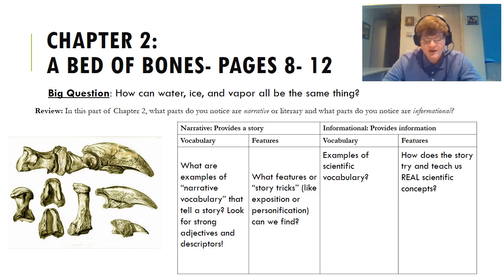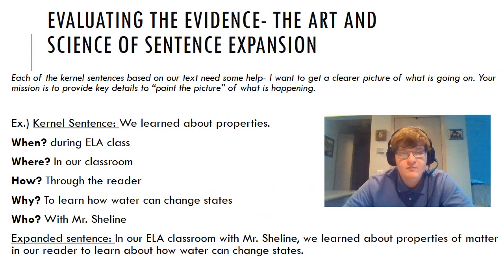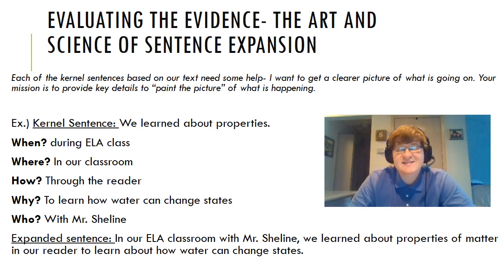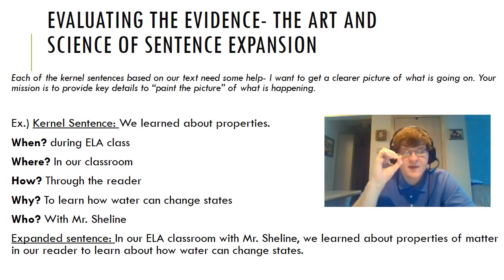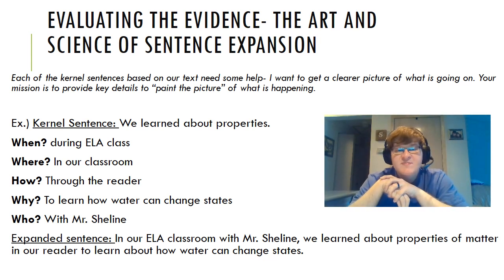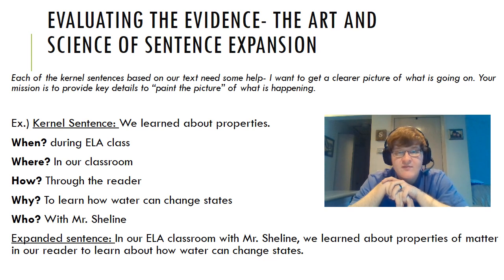For now, I'd like you to finish pages 8 through 12. After that, we have some sentence expansion to walk through. These will look familiar because we've done a lot of kernel sentences and sentence expansion this year as do nows. The kernel is that small basic part — like a kernel of popcorn that blows up into something bigger. It helps us paint the picture, and we add key words like when, where, how, why, and who. The kernel here is 'we learned about properties' — 'we' is the subject, 'learned' is the verb, and 'properties of matter' is what happened.